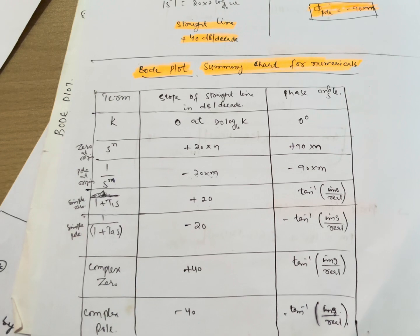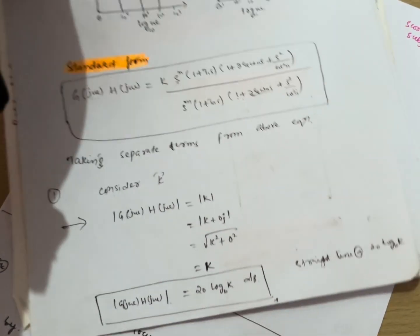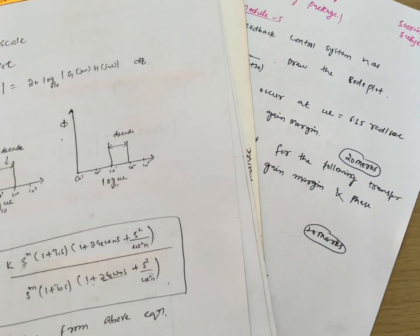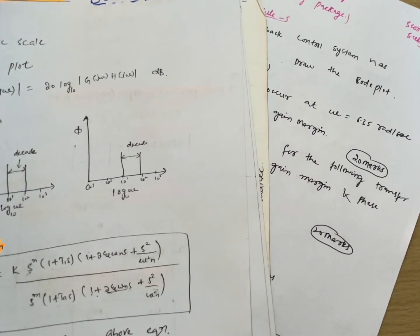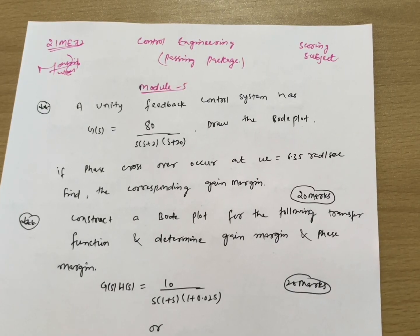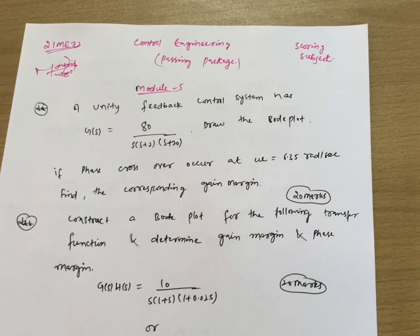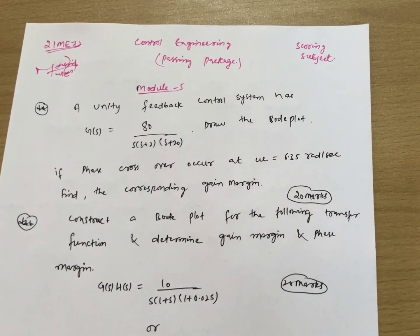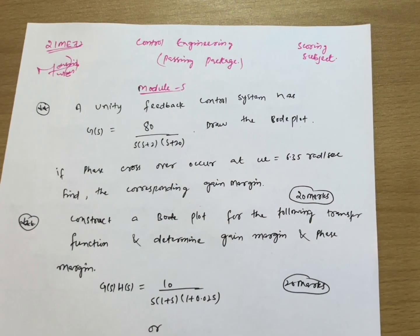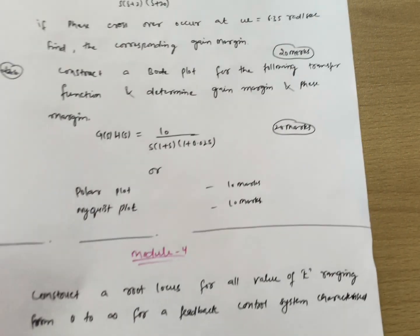I will provide the link to these handwritten notes in the description box. You can practice the five Bode plot problems I have written there — these five problems are enough to cover 20 marks from Bode plot. Also visit my playlist for the 18 scheme. Try to understand one Bode plot problem from the playlist, and then you can understand the rest from my handwritten notes.